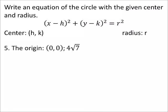All right, this one gives us a center at the origin (0, 0) with a radius of 4√7. Let's go ahead and do this one. Let's set